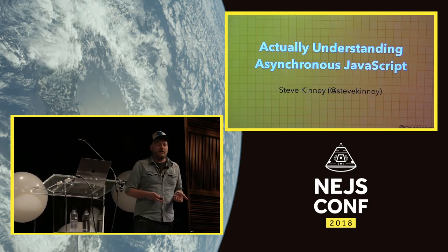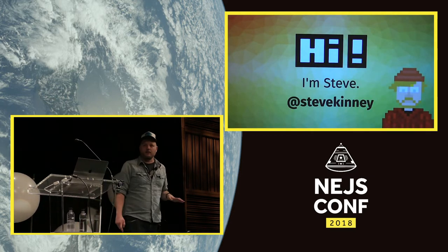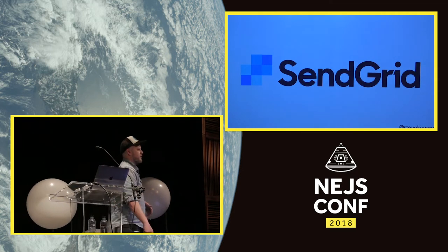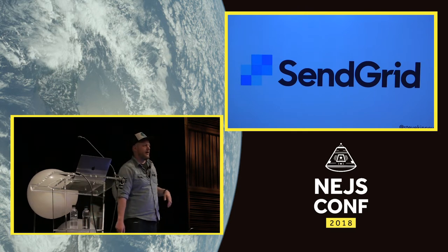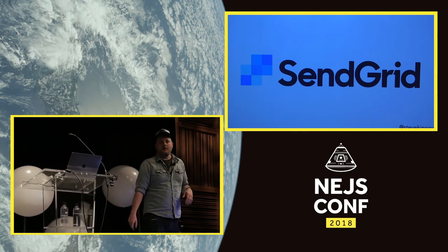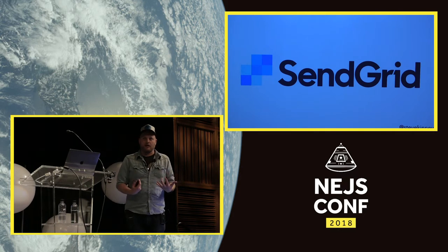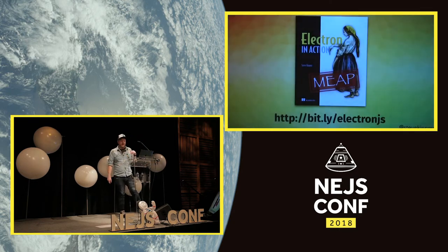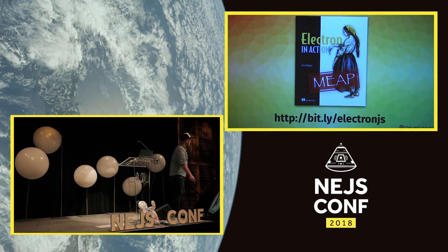My name is Steve. I live in Colorado and I don't know how to ski — those are the important details. I work at a place called SendGrid. If you've ever taken an Uber or late-night bid on something on eBay and got an email about it, we sent you that email, along with several billion other emails every day. I work on a WYSIWYG HTML editor that makes HTML emails. I'm also perpetually working on a book on Electron — I finished writing in October, then Electron 2 came out, then they announced Electron 3 beta, so it's just never going to be done.